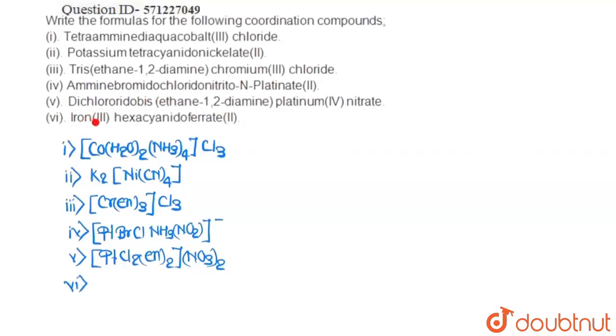Sixth compound is iron(3) hexacyanidoferrate(2). So, it will be iron(3), that means there will be Fe4 and then it is [Fe(CN)6]3.